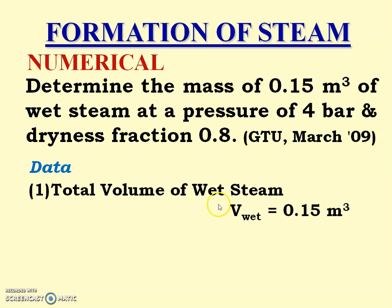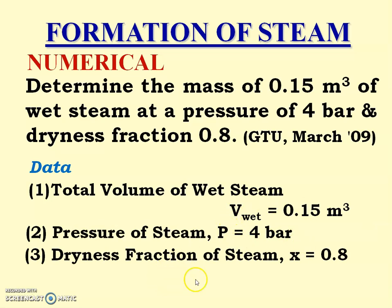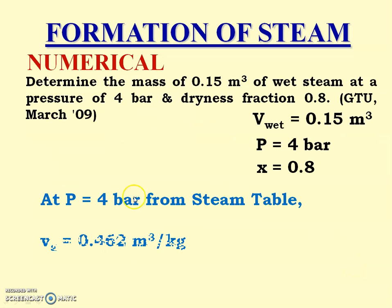Given data: total volume of wet steam V_wet = 0.15 m³, pressure = 4 bar, dryness fraction x = 0.8. From the steam table at 4 bar, vg = 0.462 m³/kg.